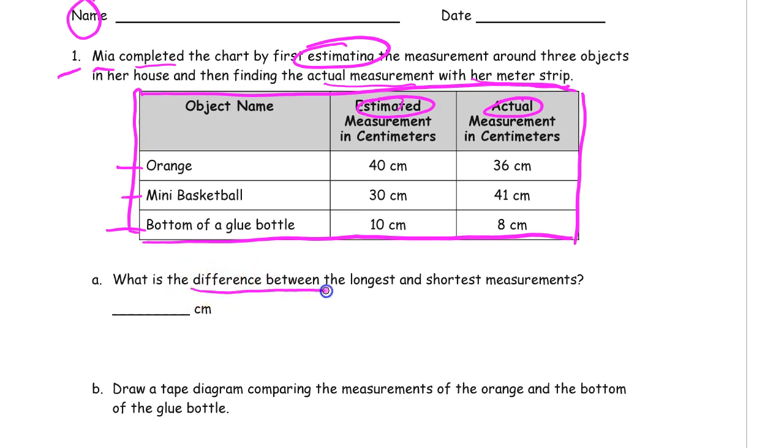Here's our first question. What is the difference between the longest and shortest measurements? So we're looking at the measurements not the estimates. The longest one was 41 and the shortest was 8. It's asking for the difference, that's what's left over after we subtract. So it's 41 minus 8.